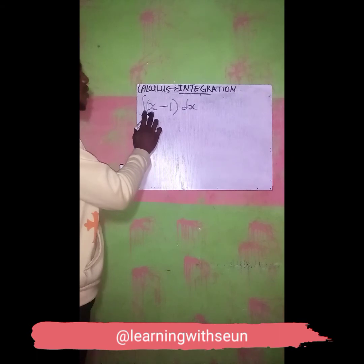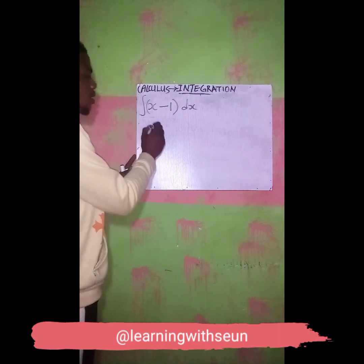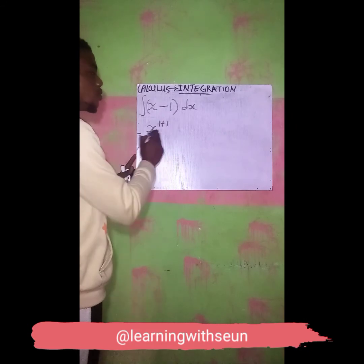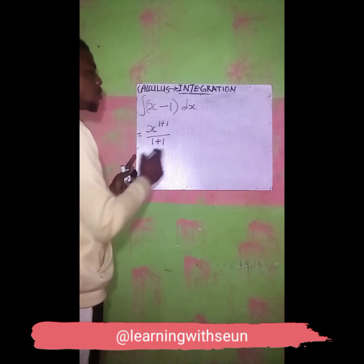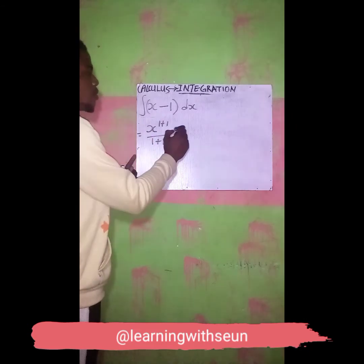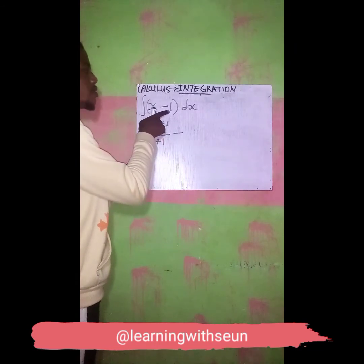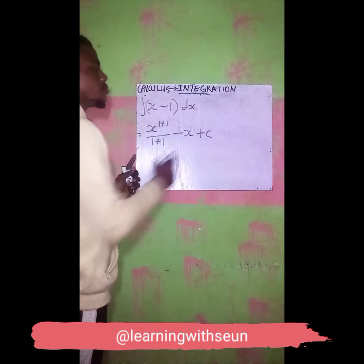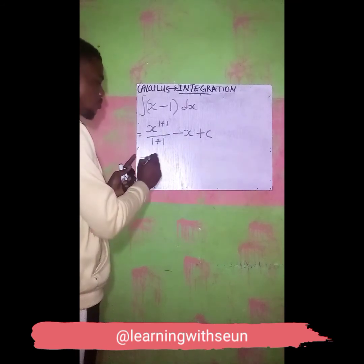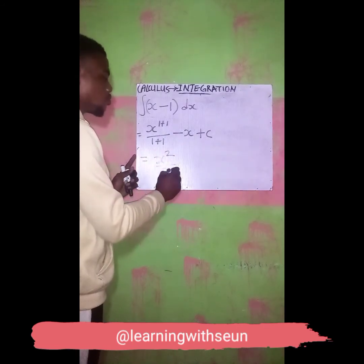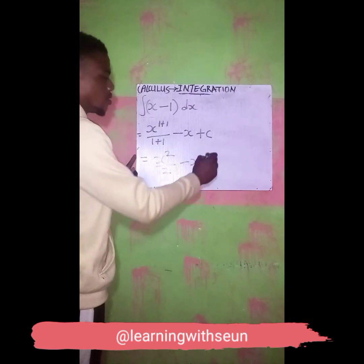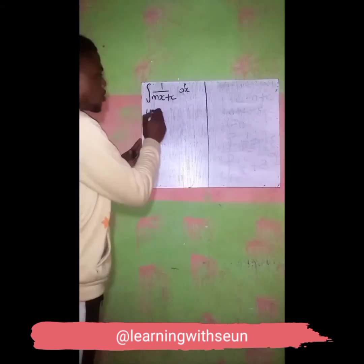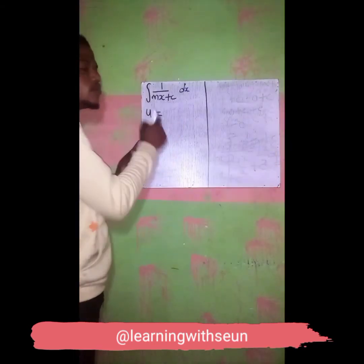If we integrate x minus 1, we are going to get x raised to the power of 1 plus 1, over 1 plus 1, minus if I integrate 1 we have s, plus C. This is equal to s raised to power 2 over 2, minus s plus C — and that is going to be the final answer.